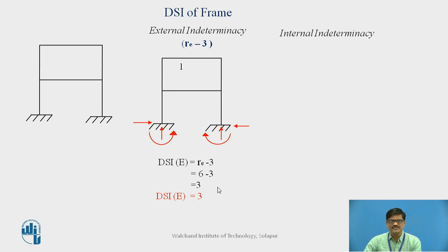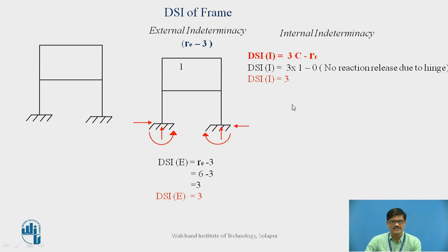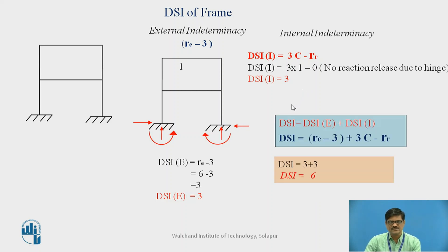Internal indeterminacy corresponds to loops and released reactions due to internal hinges, if present. Internal indeterminacy is given by 3C minus RR. In this case, there is one loop, so 3 into 1 = 3. RR will be 0, since we don't have any internal hinge here. Therefore, internal indeterminacy will be 3, and the total indeterminacy of the structure will be 6.